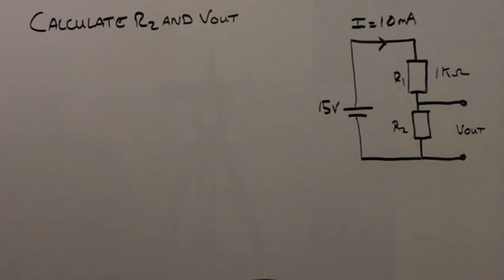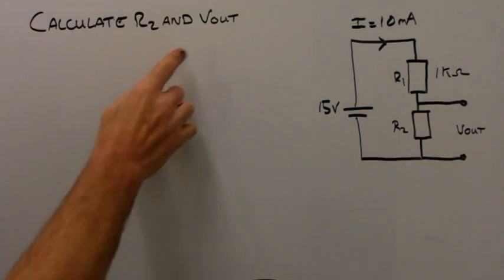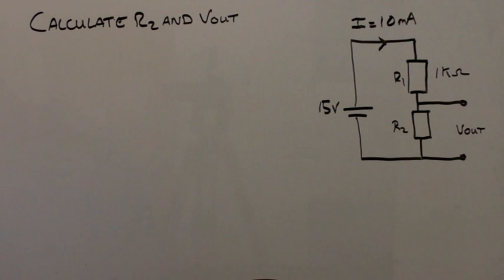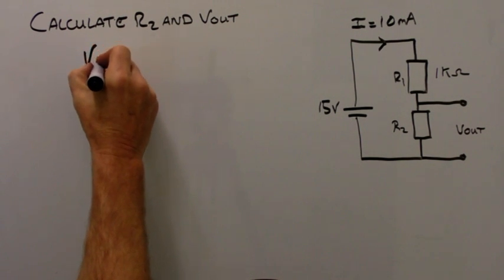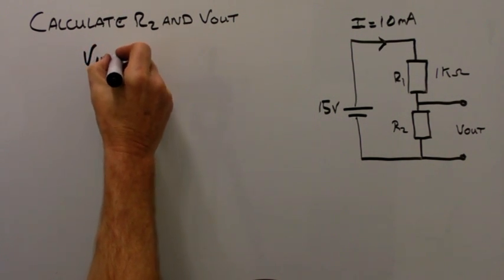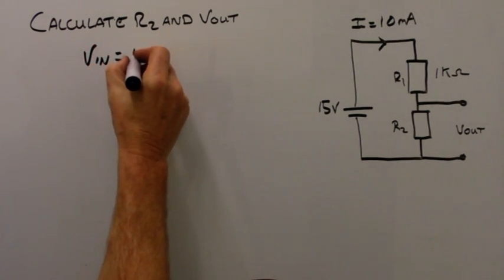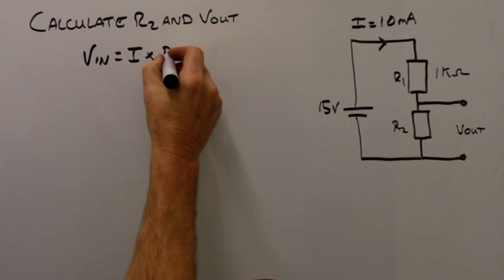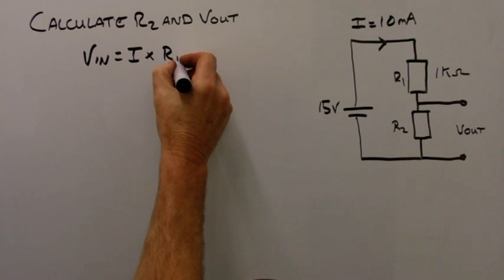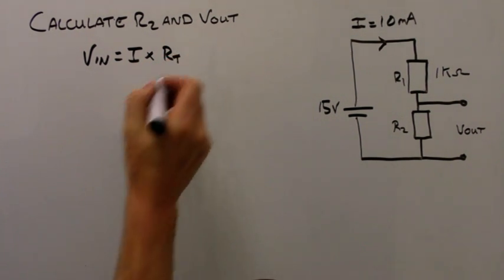We're asked to calculate R2 and Vout. From Ohm's law, we know that V in equals I times Rt. We know that I equals 10 milliamps and V in is 15 volts. So 15 volts equals 10 times 10 to the minus 3 amps, times Rt.